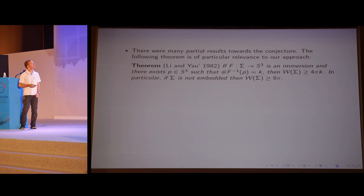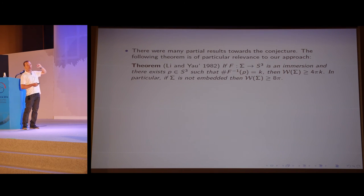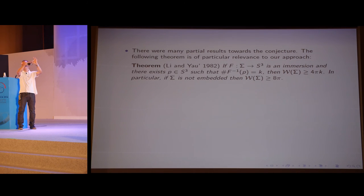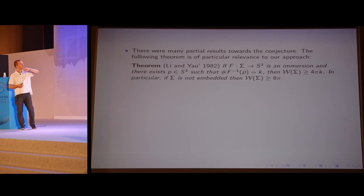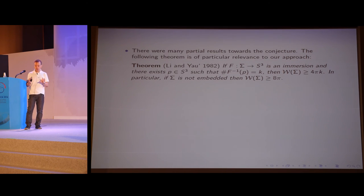There were many partial results towards the conjecture, which I won't mention here. I'd like to mention this particular one because it's relevant to our approach: a theorem of Li and Yau of 1982, which says that if your surface has a point that is covered k times — k sheets of the surface passing through that point — then the energy should be at least 4 pi times k. In particular, if the surface is not embedded, if it has some self-intersection, then already the energy is greater than or equal to 8 pi, which is better than 2 pi squared. So in order to prove the conjecture, we may assume that the surface is embedded.